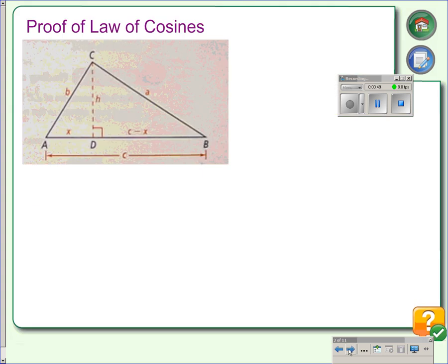Okay, so here is a triangle. We're going to use this to prove the law of cosines. We're going to start with this piece of the triangle.